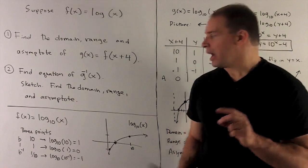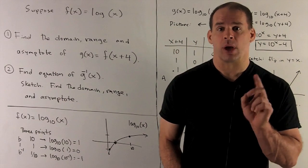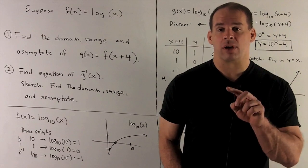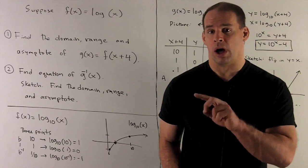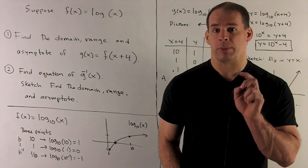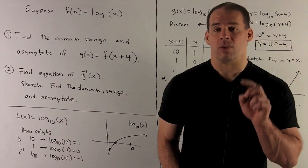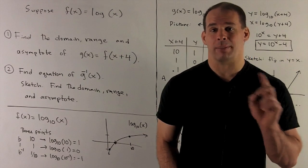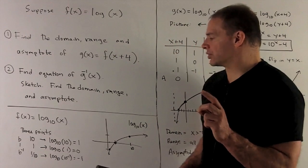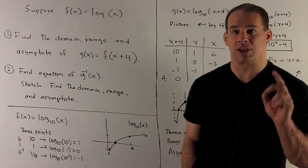So the three points: if I put 10, 1, or 1 tenth into log of x, what comes out? Log base 10 of 10 — putting the base in for the logarithm — gives me 1. Log base 10 of 1: putting 1 into any logarithm, I get 0 out. And log base 10 of 1 tenth — that's 10 to the minus 1 — I bring the minus sign out, so we get minus 1. My three points are (10, 1), (1, 0), and (0.1, −1).